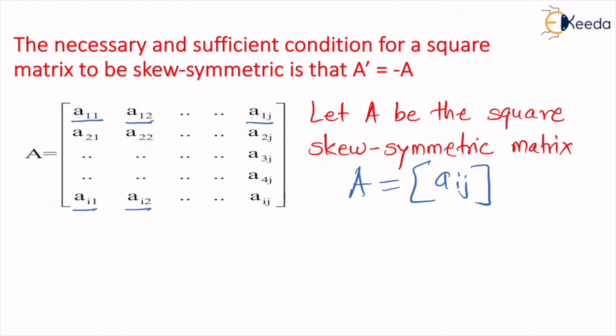We have assumed that A is a square skew symmetric matrix. Whenever we say any matrix is a skew symmetric matrix, we can derive two conditions. The first condition it has to satisfy is: any element aij of that skew symmetric matrix will be equal to negative of aji, the element at position j,i. This is a condition which is satisfied by all skew symmetric matrices.